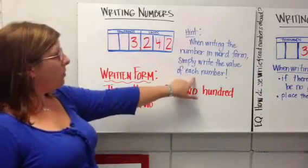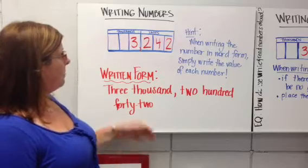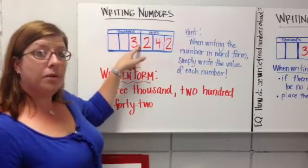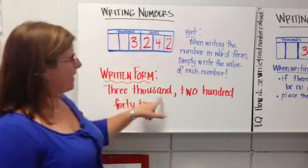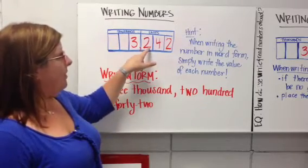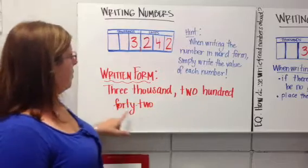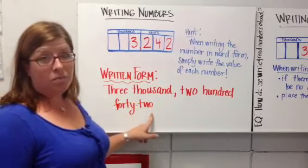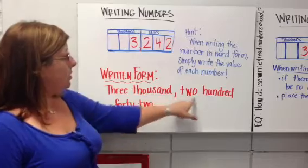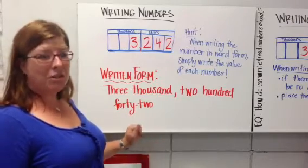When writing the number in word form, you simply write the value of each number. So what's the value of the three in the thousands place? We've learned this before — it's 3,000. And then we have 240 and 2. So that's our number: three thousand, two hundred forty-two. That's all you have to do.